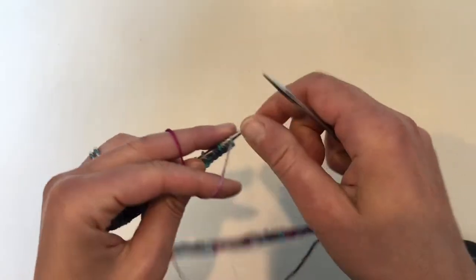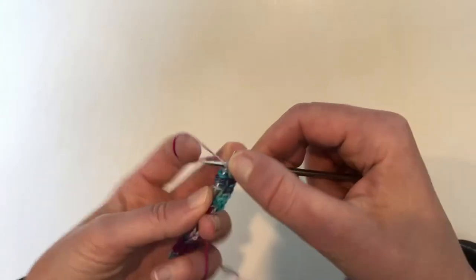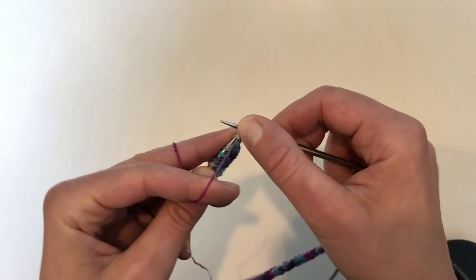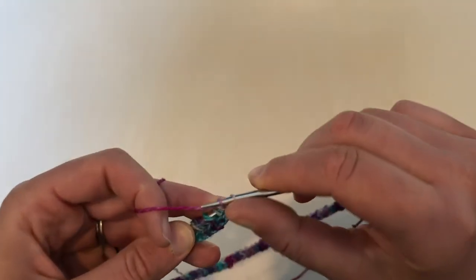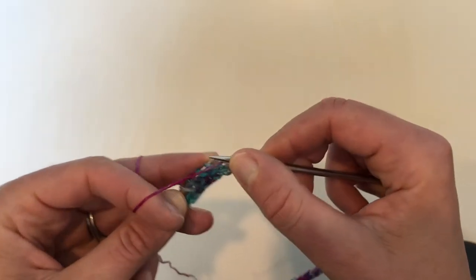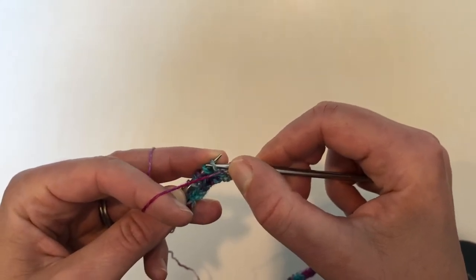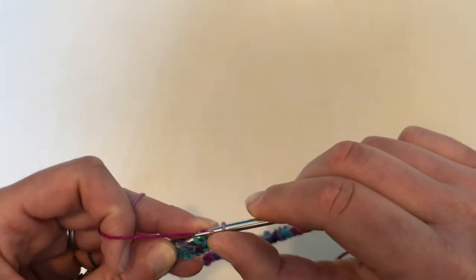And to bind them off, I am actually just going to knit two together, and then bind one off. So purl those two together, purl the first two together, and then purl the next stitch, and pass that stitch over. And then we have to do that one more time. So purl that stitch, and pass it over.